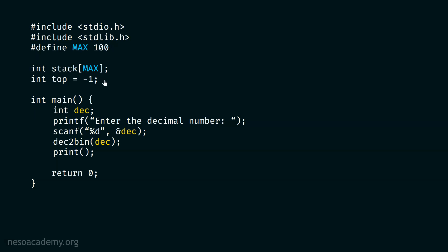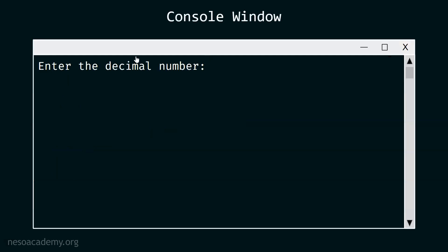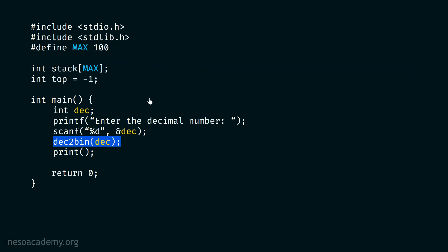We are using a stack. Inside the main function, I declare a dec variable. I use a printf to ask the user to enter the decimal number, and scanf stores the user's input inside dec. Then we call the dec2bin function — decimal to binary — passing the decimal number dec to it for conversion.